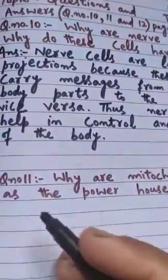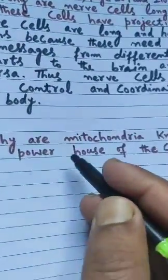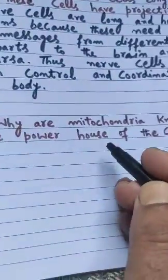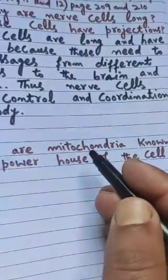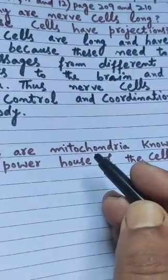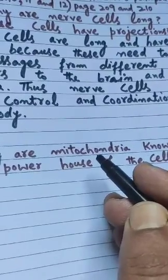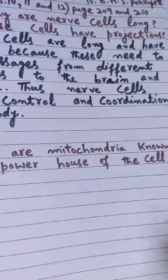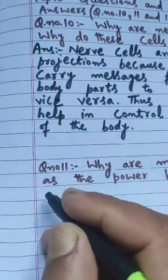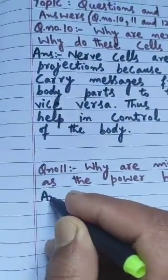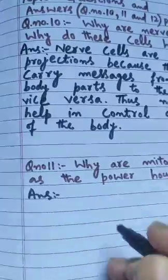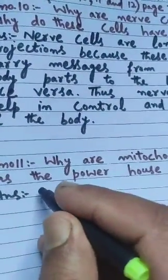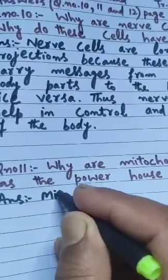That was question number 10. Now we move to question number 11: Why are mitochondria known as the powerhouse of the cell? The mitochondria is a double membrane organelle. Let's look at why we call it the powerhouse of the cell and write the answer.